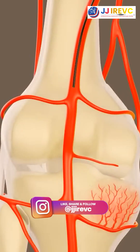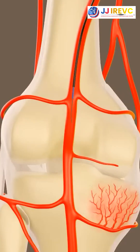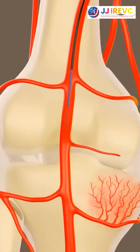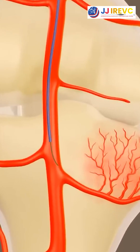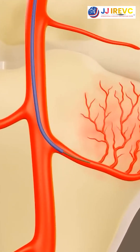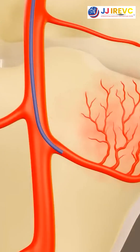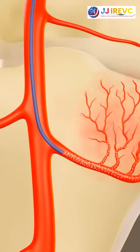In this procedure, we insert a small catheter through the groin into the knee joint and do an angiogram. In that, the abnormal blood vessels are identified. Then, particles or hemi-penoma medicine are delivered through the catheter, and the abnormal blood vessels are blocked.